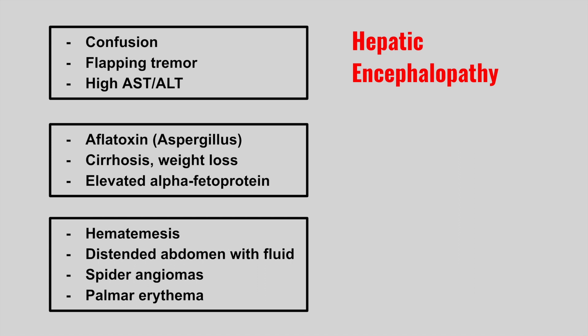The next patient has a history of aflatoxin exposure from Aspergillus, with cirrhosis, weight loss, and elevated alpha-fetoprotein. This is hepatocellular carcinoma. An elevated AFP is a tumor marker for this cancer. Many things can cause it — Wilson's disease, hepatitis, fatty liver disease, alcoholic liver disease, and Aspergillus. Look out for people with liver issues, weight loss, and a high AFP level.